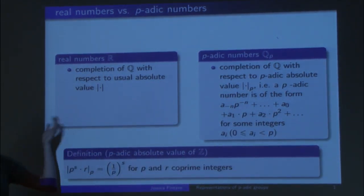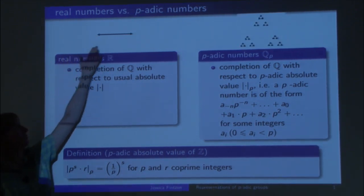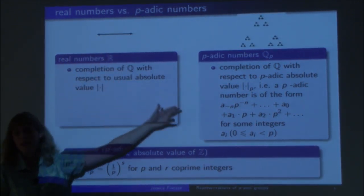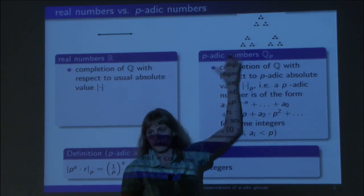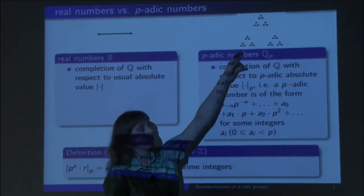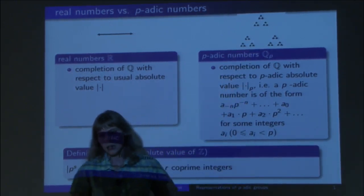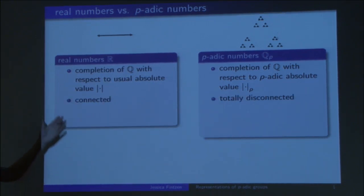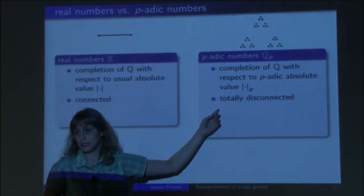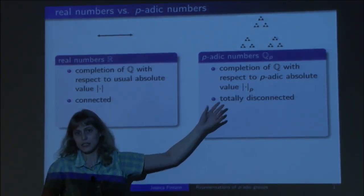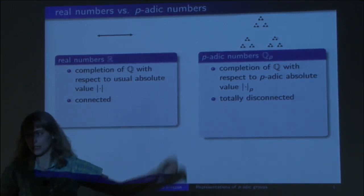How do these objects look? The real numbers, everyone knows, is just the real line. The p-adic numbers can be thought of as a fractal — if you try to draw them topologically, you end up with a fractal. This means the real numbers are connected, while the p-adic numbers are totally disconnected. Topologically, these two things behave very differently.